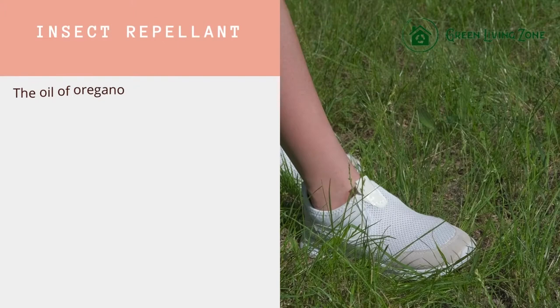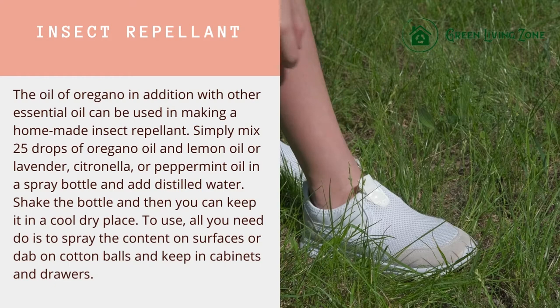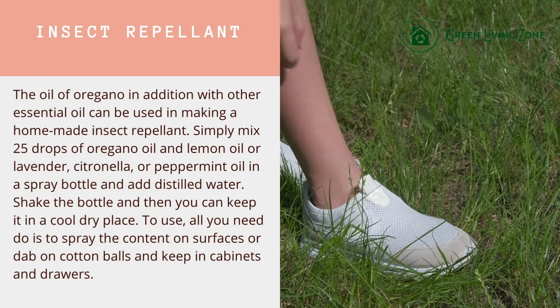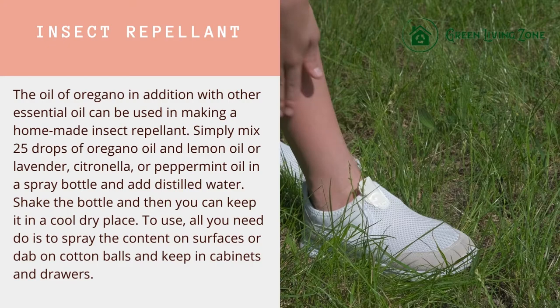Insect repellent: oregano oil combined with other essential oils can be used to make a homemade insect repellent. Simply mix 25 drops of oregano oil with lemon oil, lavender, citronella, or peppermint oil in a spray bottle, add distilled water, shake the bottle, and keep it in a cool, dry place.